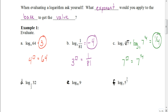Letter D looks a little weird too. We're asking: what exponent would I apply to base 1/2 to get a value of 32? This is similar to the previous problem — we're going from a fraction to a non-fraction. A negative exponent will do that, because a negative exponent means we take the reciprocal of the base, and the reciprocal of 1/2 is 2. Then we ask: what exponent applied to 2 gives 32? That's 5, because 2 to the 5th power is 32. So the answer is negative 5.